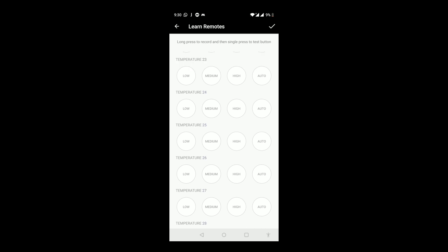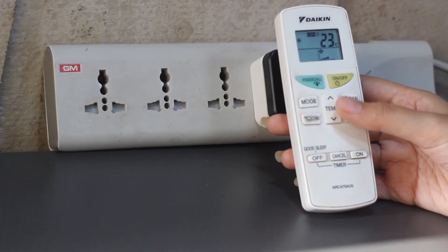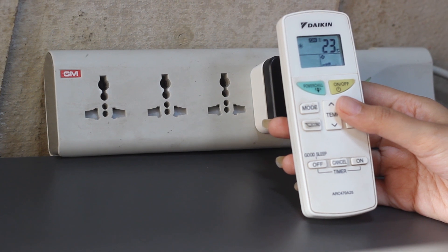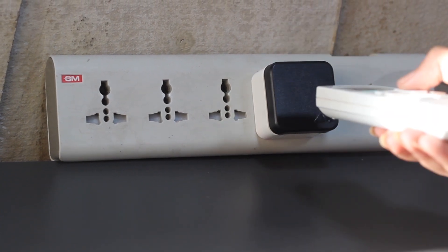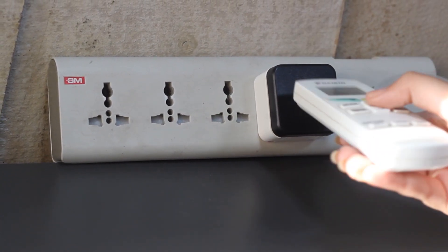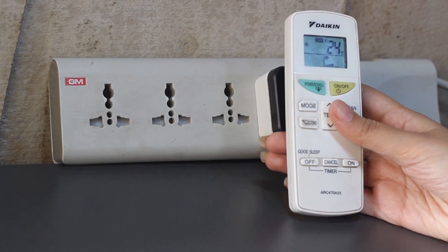To learn a button, long press on it and a pop-up will appear. Now for an AC remote, if you wish to learn temperature 24, go to temperature 23 on the physical remote, then point the physical remote to the Polar and press the temperature up button while the timer is ticking.